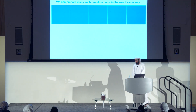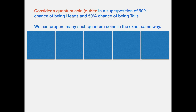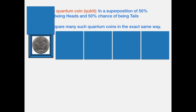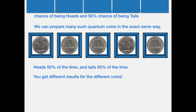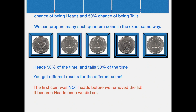Consider what I call a quantum coin, or a qubit — a coin in a superposition of 50% heads and 50% tails. We can prepare many such quantum coins in exactly the same way. As I open five boxes, I'll find heads, then tails, tails, heads, tails — heads 50% of the time and tails 50% of the time. The key point is that you get different results for different coins even though they started with the exact same quantum state. I should emphasize that the first coin was not heads before I removed the lid — it became heads only once I did so. In quantum mechanics, the mere act of observation changes the state of the system.